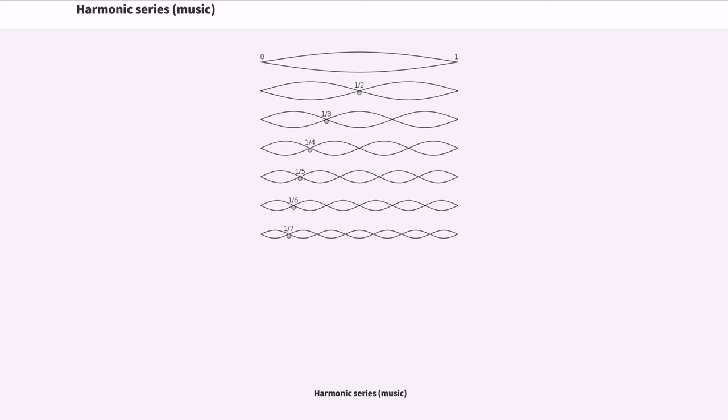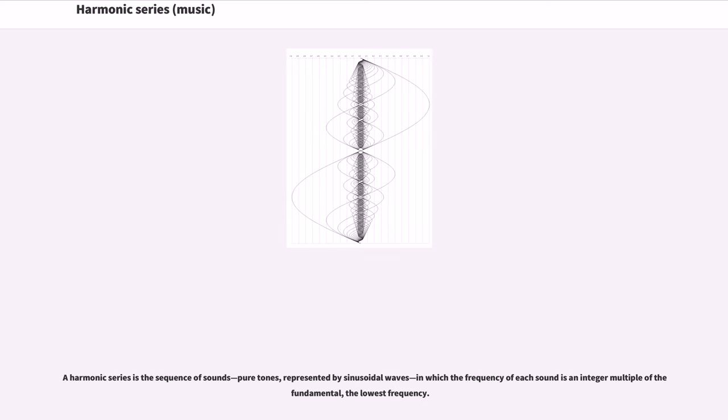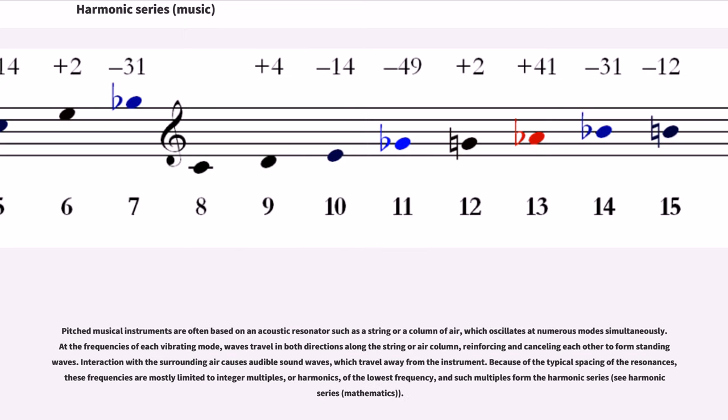A harmonic series is the sequence of sounds, pure tones represented by sinusoidal waves, in which the frequency of each sound is an integer multiple of the fundamental, the lowest frequency. Pitched musical instruments are often based on an acoustic resonator such as a string or a column of air which oscillates at numerous modes simultaneously.